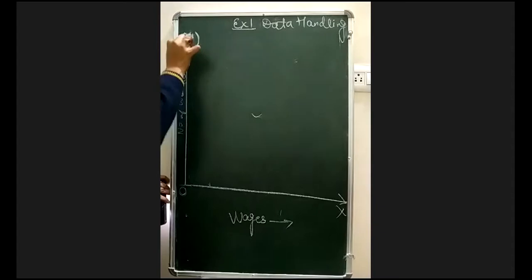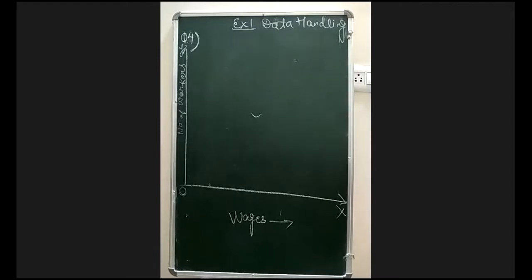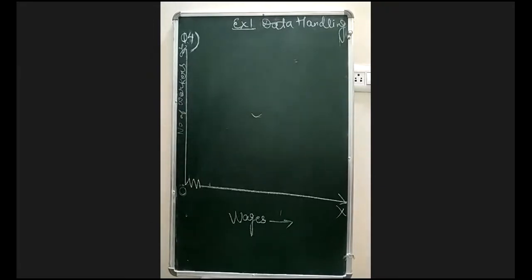On the graph we are starting from 800 since we have no data between 0 and 800. Because of this gap, we draw a kink on the x-axis — a kink means a break, indicating we have no data between 0 and 800. The actual values start directly from 800. So we first draw the kink.